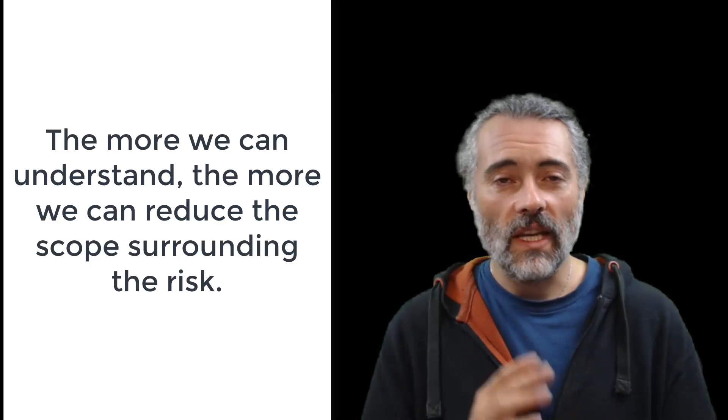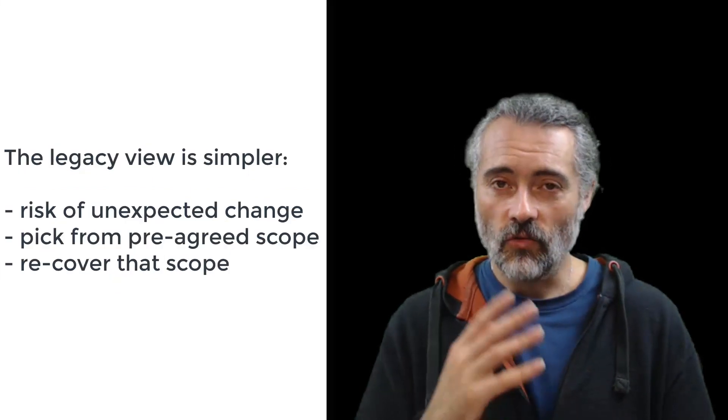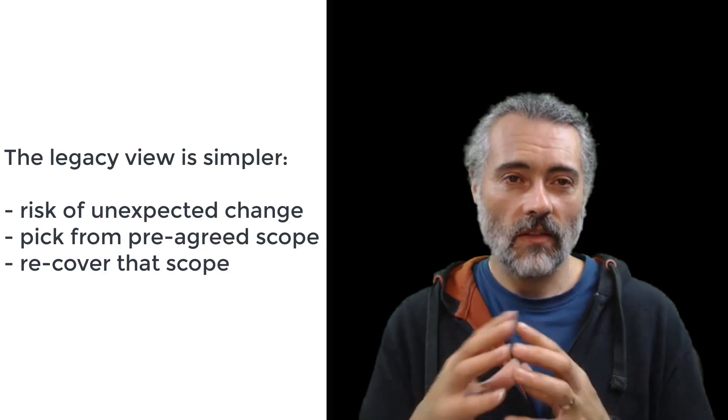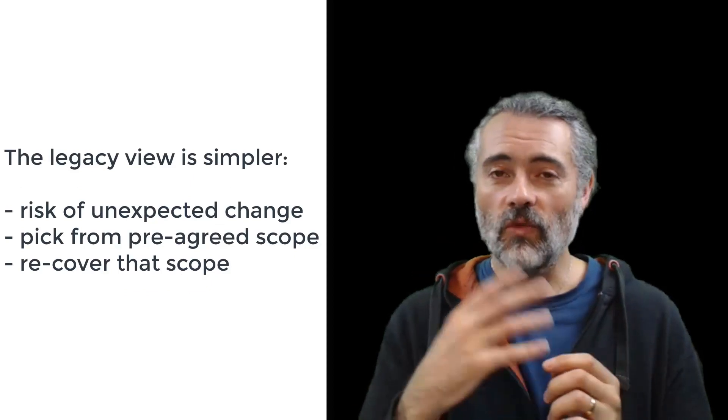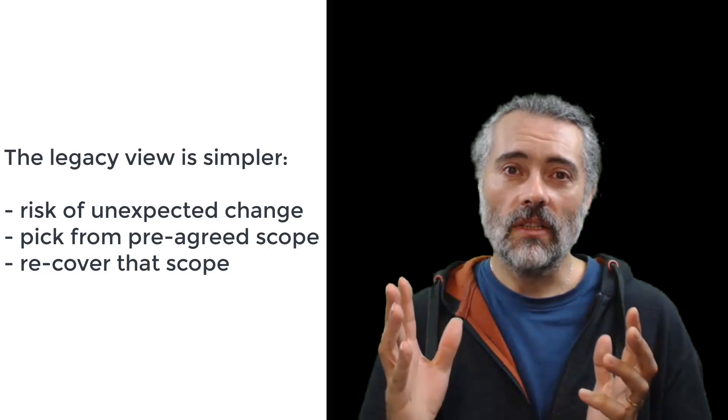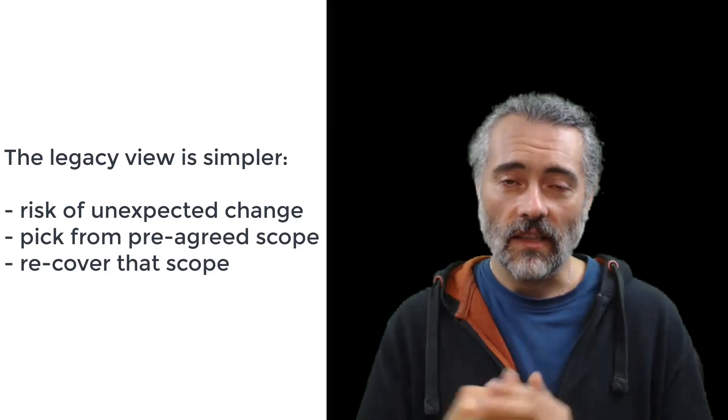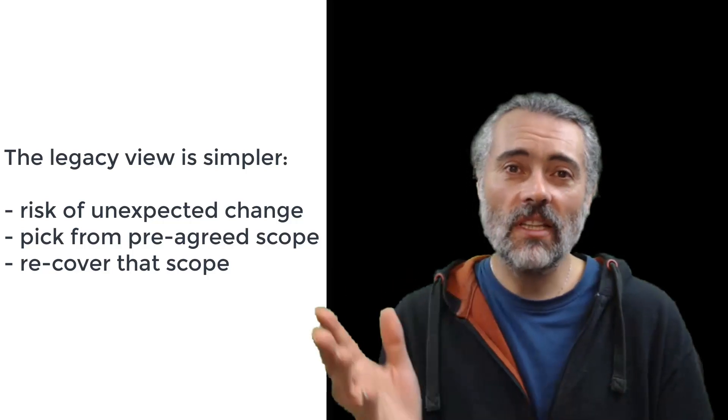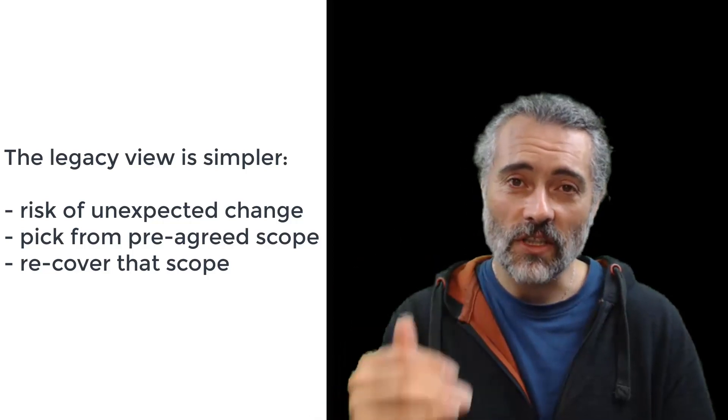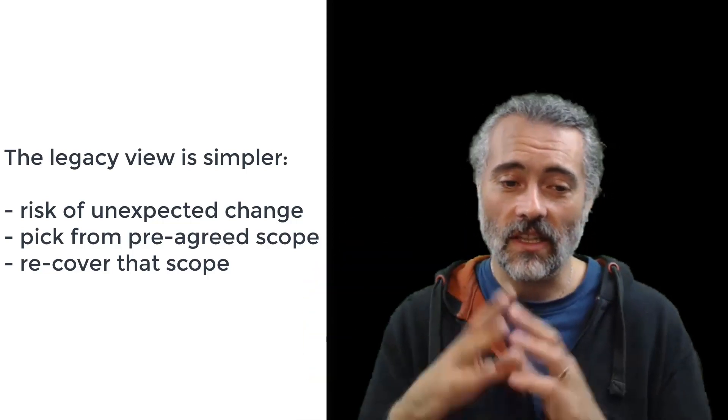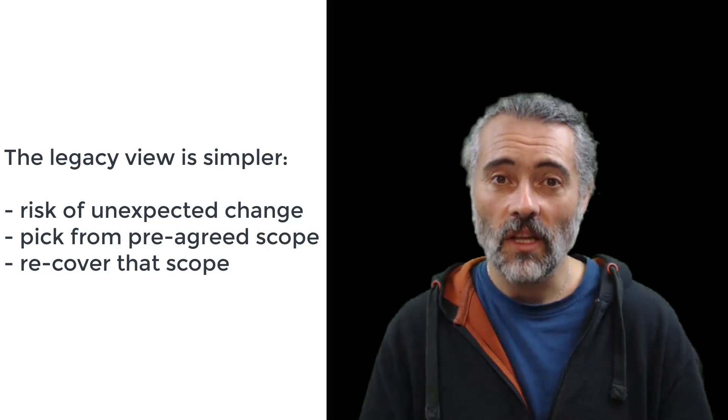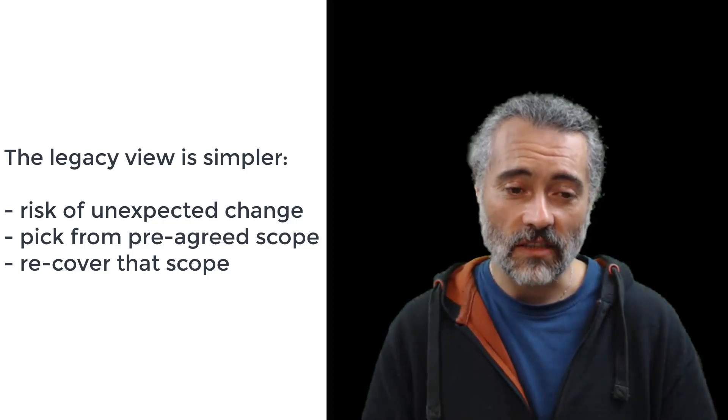Now the legacy view is simpler. There's a risk of unexpected change. We pick from our agreed set of scope, we recover that scope, job done. There's very little hassle there. It probably doesn't reduce the risk very much. There's still a huge risk that we haven't actually covered it because it's new functionality, but it makes things seem simple. So we've got a nice simple term like regression testing.